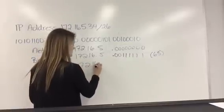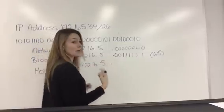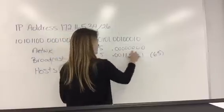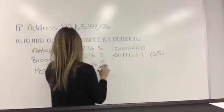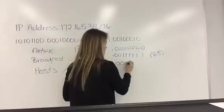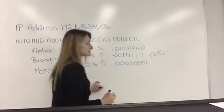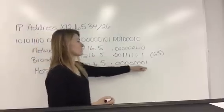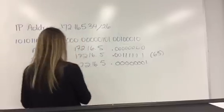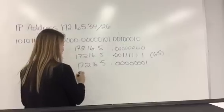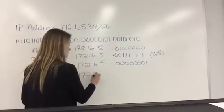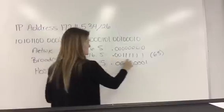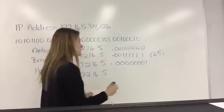So your hosts are going to be 172.16.5 and then the first host address, we're going to add one to the network, 1, 2, 3, 4, 5, 6, 7, 8, right? So that's actually 172.16.5 and then our last host address is going to take our broadcast and subtract one,